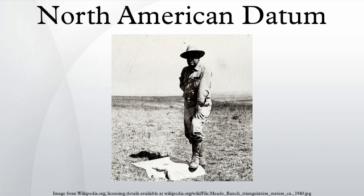Because Earth deviates significantly from a perfect ellipsoid, the ellipsoid that best approximates its shape varies region by region across the world. Clark 1866, and the North American Datum of 1927 with it, were surveyed to best suit North America as a whole. Likewise, historically, most regions of the world used ellipsoids measured locally to best suit the vagaries of Earth's shape in their respective locales. While ensuring the most accuracy locally, this practice makes integrating and disseminating information across regions troublesome.